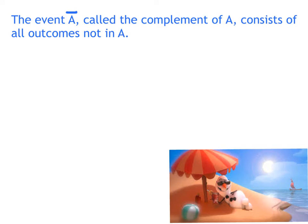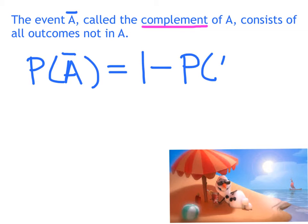Alright, here's another vocabulary word for you. The complement. The event A with a bar over the top of it is called the complement of A. And it consists of all outcomes not in A. Remember, complement in geometry, that was the opposite. So all the complement of A is just the opposite of A. And the probability of a complement is equal to 1 minus the probability of the original.